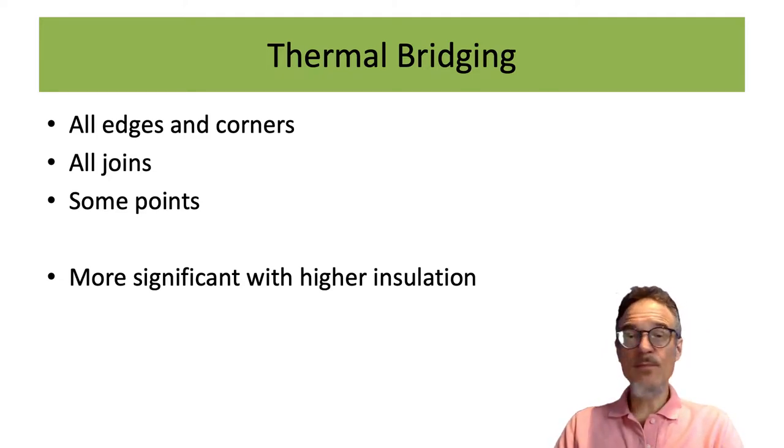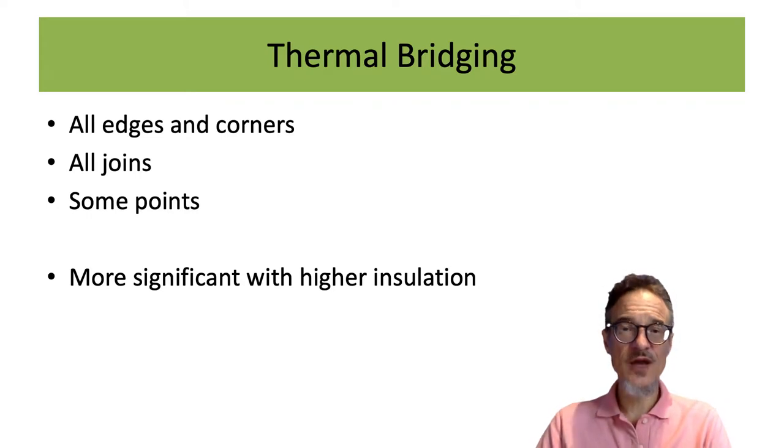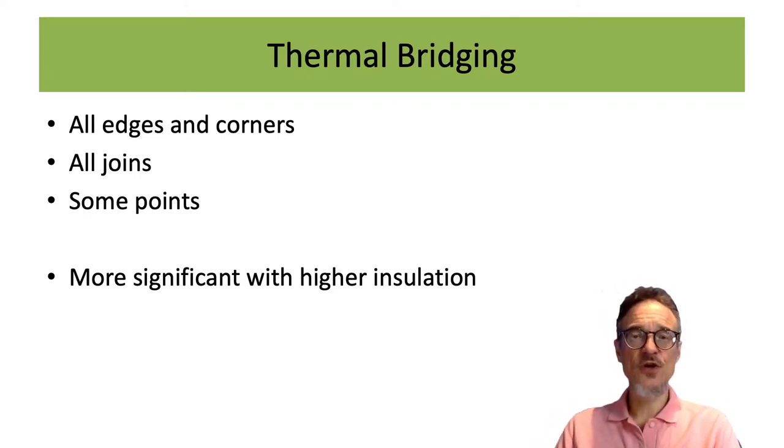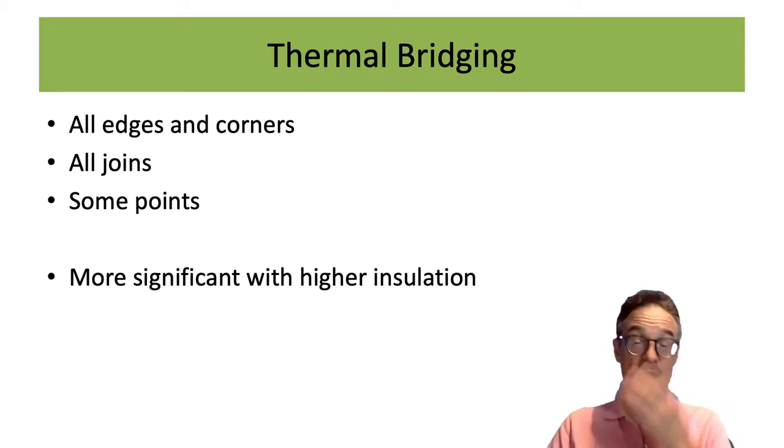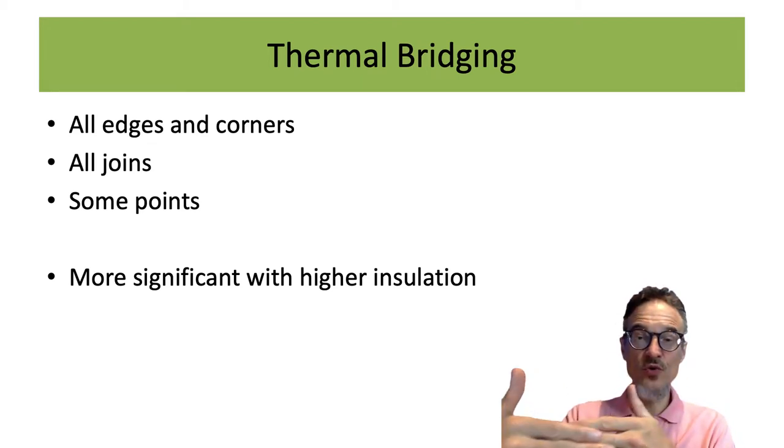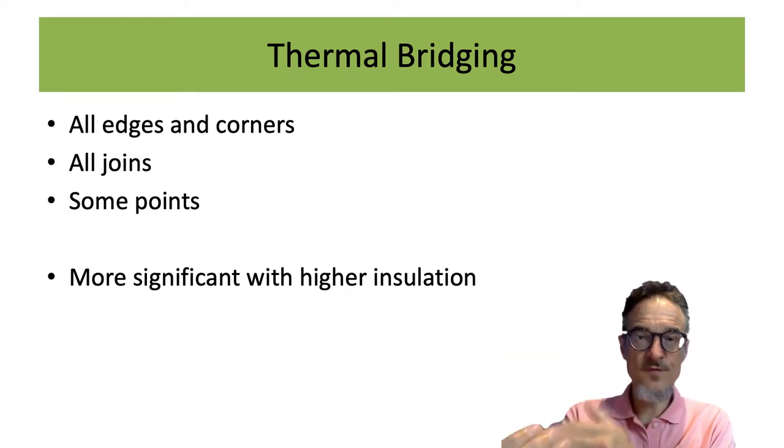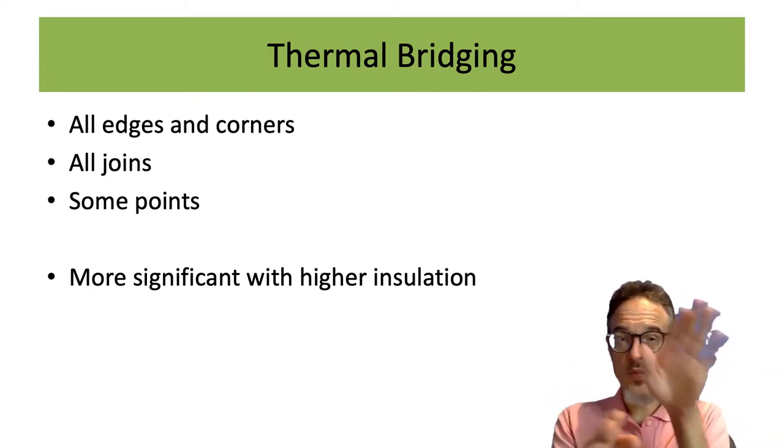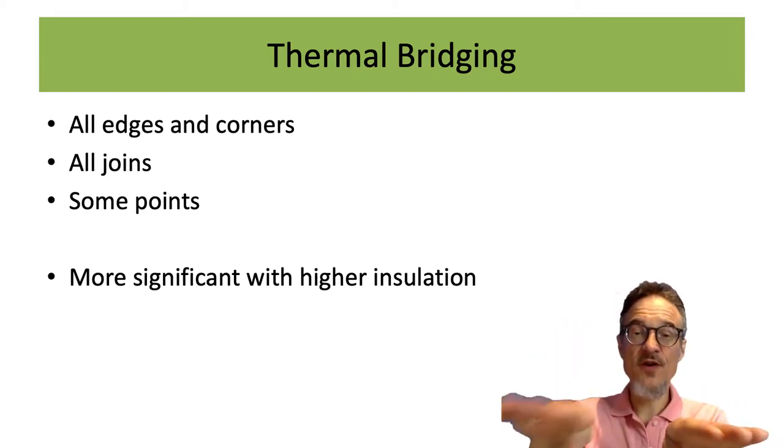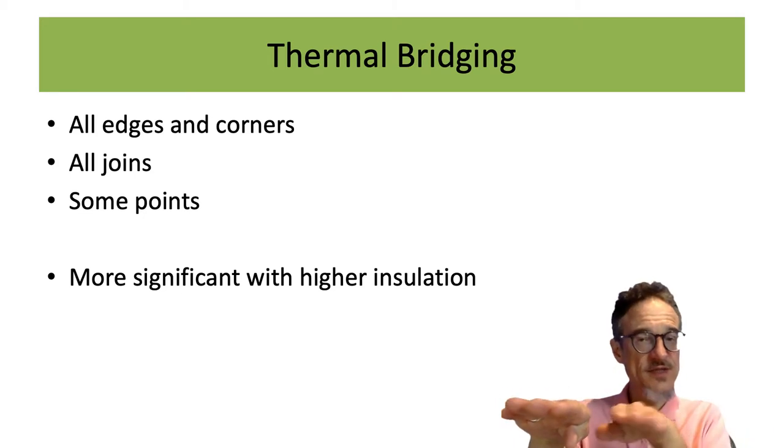And as you get more insulation, these become more significant. So if you don't have much insulation in your house, it doesn't make a big difference how the joints between the windows and the walls or how the corners are. But as you put more insulation on the walls, heat will find the easiest way out. And if there's a gap between one insulated area and another insulated area, the heat's just going to escape through the gap.